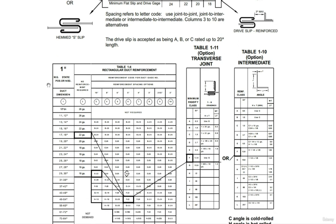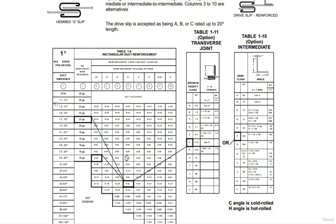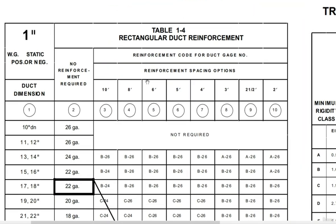Considering that the duct is operating at one-inch static pressure classification, I have Table 1.4, which is for rectangular duct reinforcement. This table can be read as follows: the first column represents the duct dimensions, and on the top left of the screen you can see the pressure classification for which duct table you will use. The second column shows the gauge of the duct required in case no reinforcement is needed. If reinforcement is not required, you use the duct gauges from the second column for sheet metal thickness. However, if reinforcement is required, you go through columns 3 to 10.